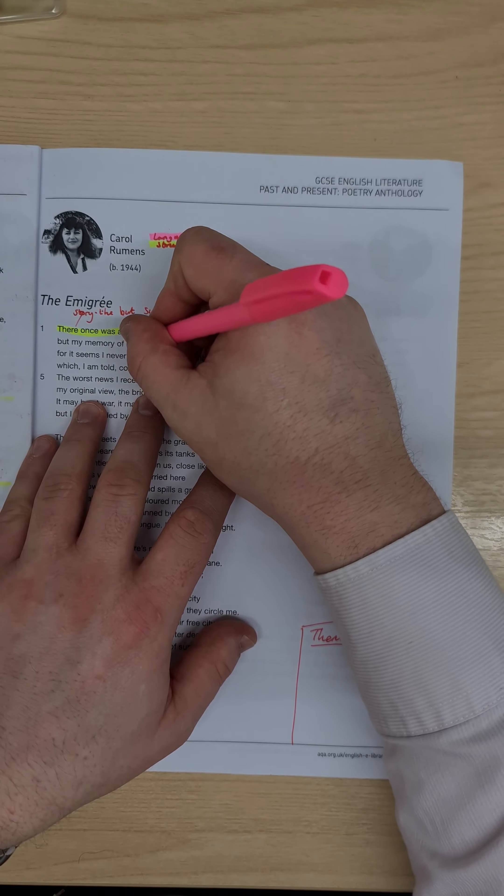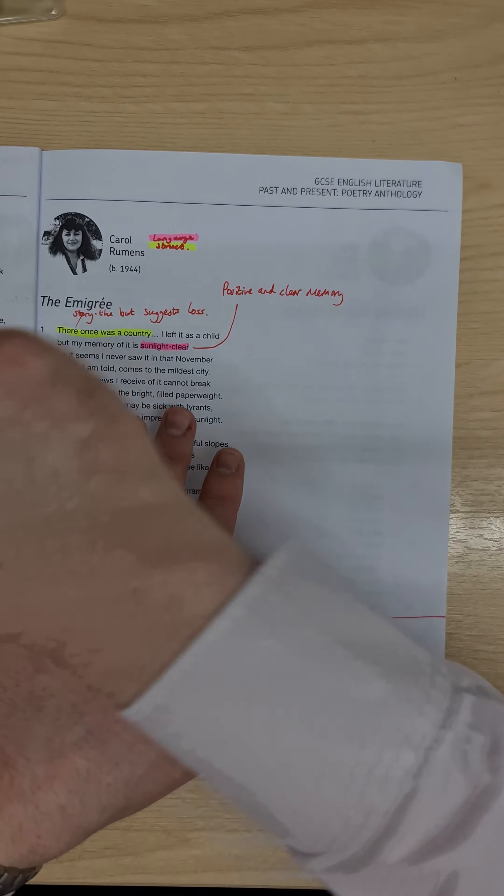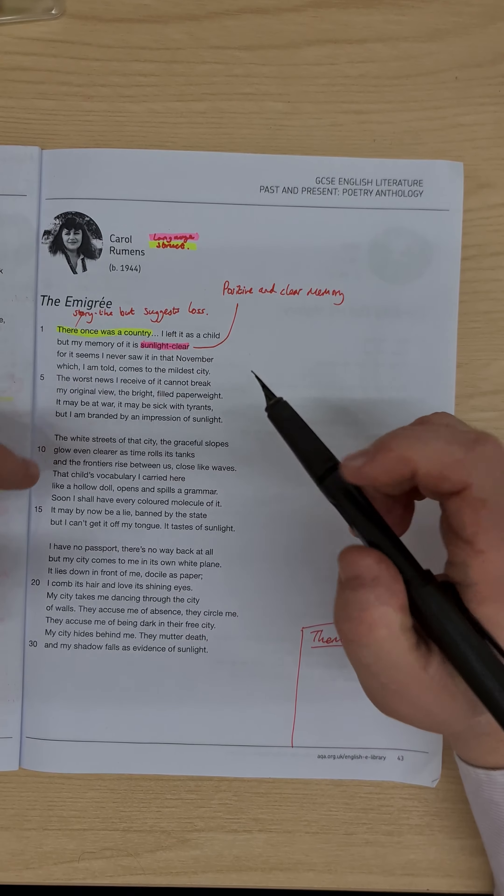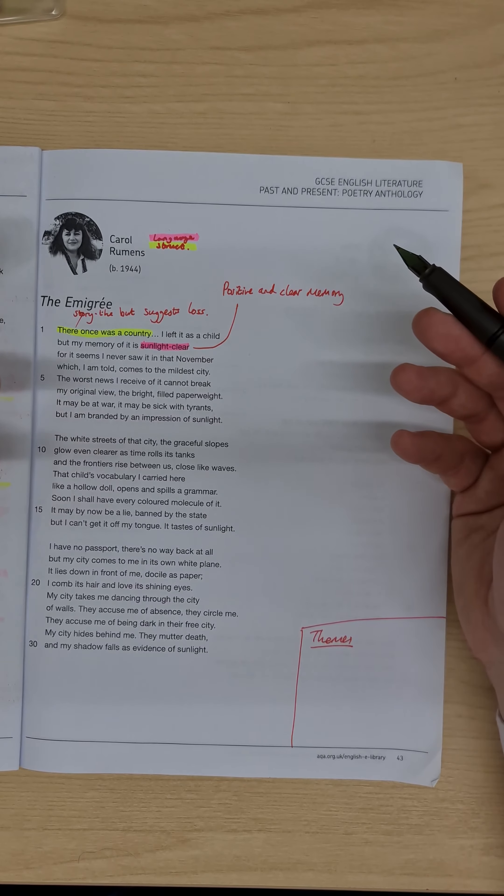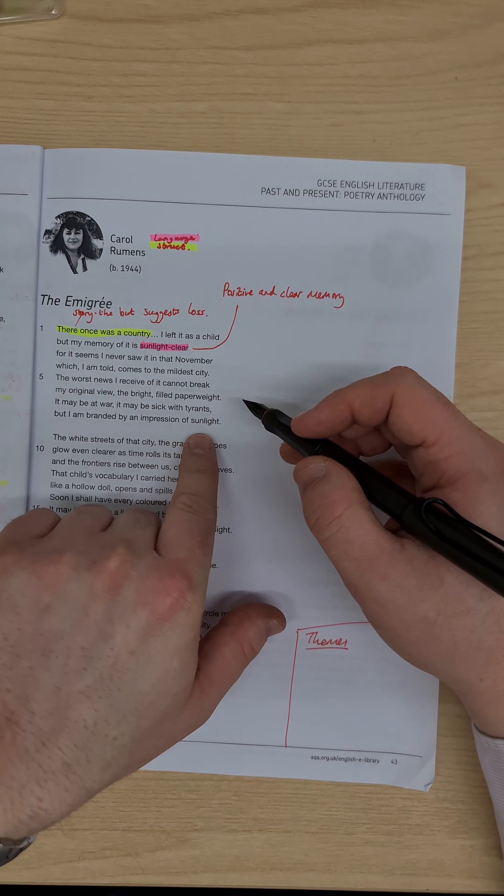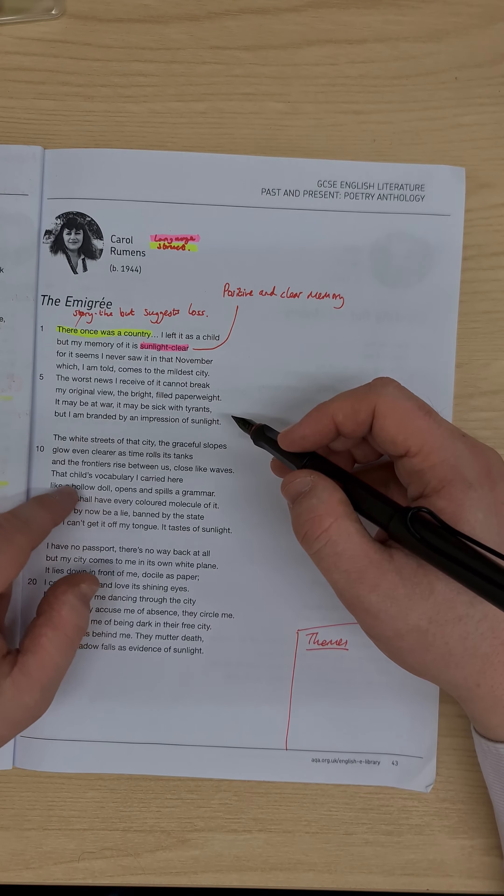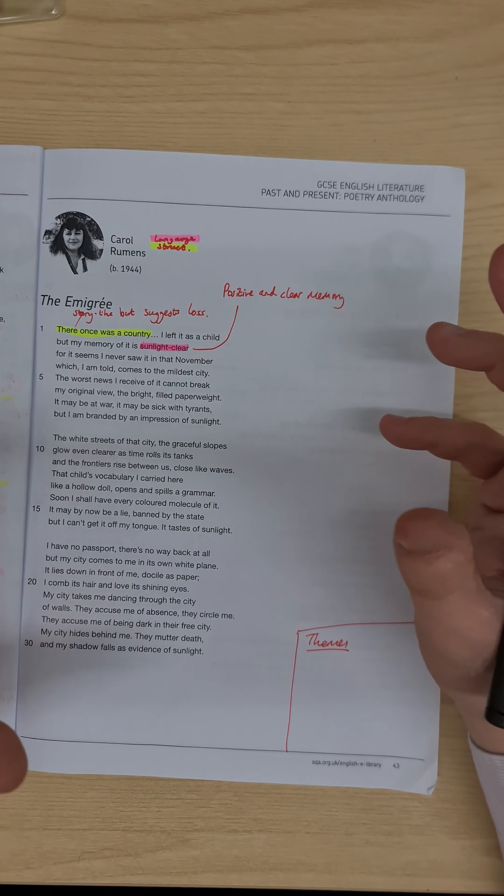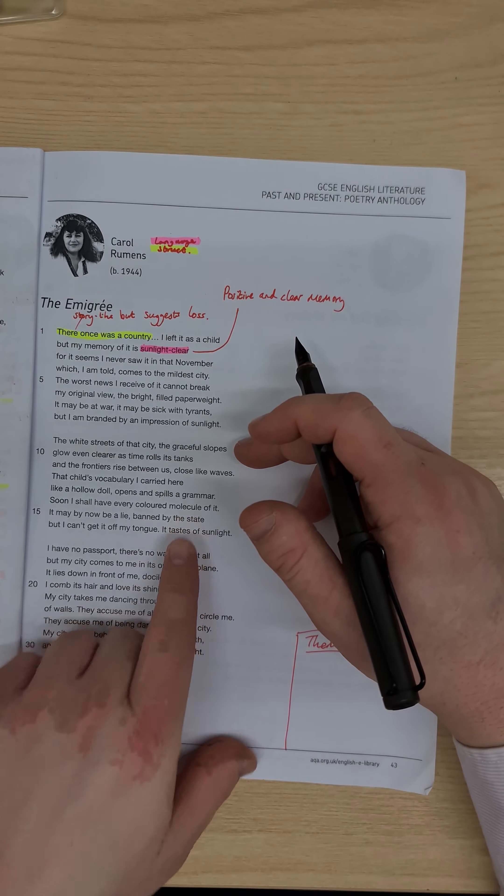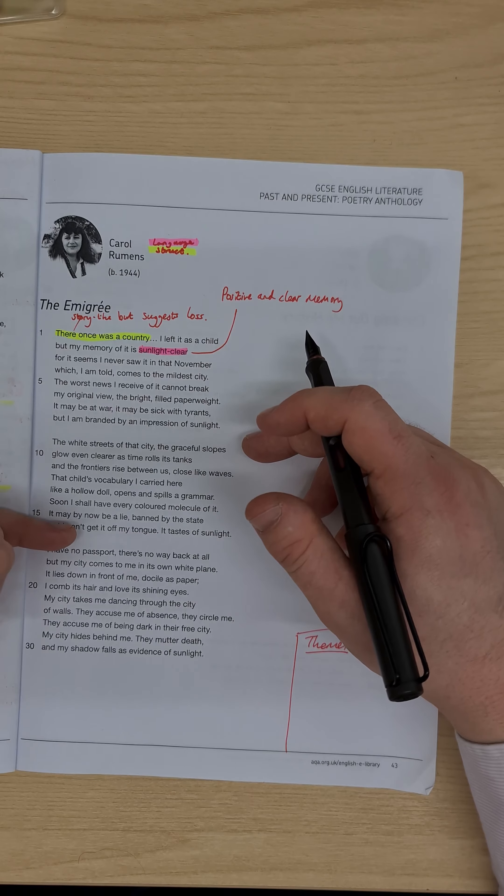So this fits in the semantic field. One of the semantic fields in this poem is imagery about light, and we have a lot of light imagery throughout here. When we have things about sunlight clear, November, time of the year when it's dark, the bright-filled paperweight. I am branded by an impression of sunlight at the end of the first stanza. The white streets that glow. Then we have this child vocabulary, and that's also not necessarily about light, but it's also about positivity. We have every coloured molecule. It tastes of sunlight. And it's interesting that most of that light imagery is in the first two stanzas.